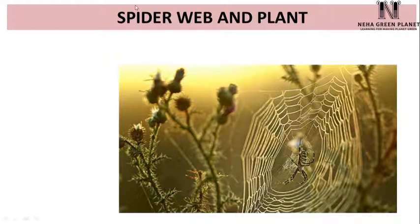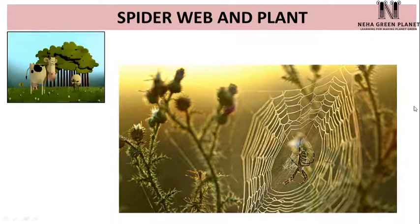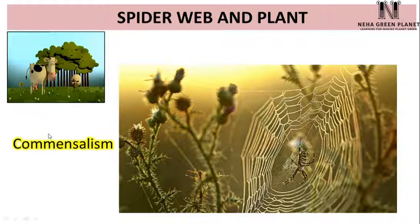Another relationship is observed between a spider web and a plant. Spider creates a web on plants, so the spider is definitely benefited, but the plant is not able to derive any benefit — it remains unaffected. This is a plus-zero relationship: plus for the spider, zero for the plant. This is similar to the cow and dung beetle case, so the relationship is commensalism — one species is unaffected and the other is getting benefit.